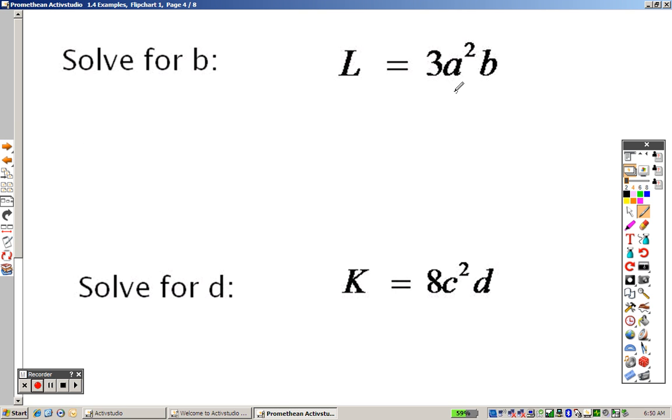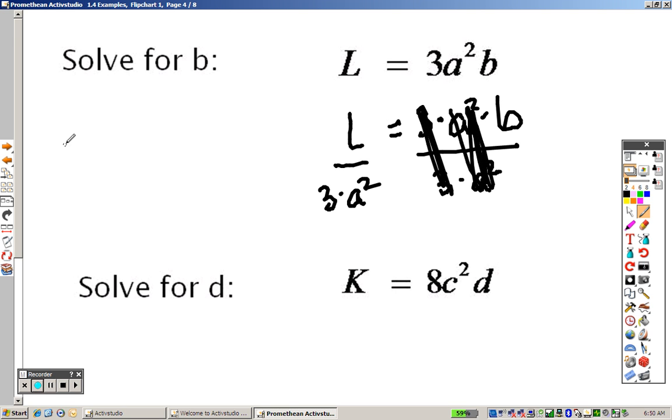To solve for B, same concept. So I'll just do this one. It's 3 times A squared times B equals L. I'm trying to get B by itself. So because it's all multiplication, let's divide them onto both sides here. So you get B equals L over 3A squared.